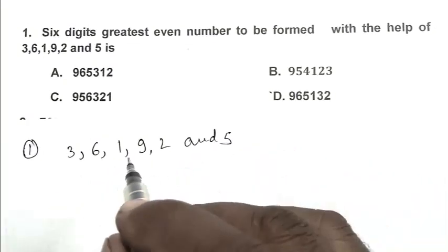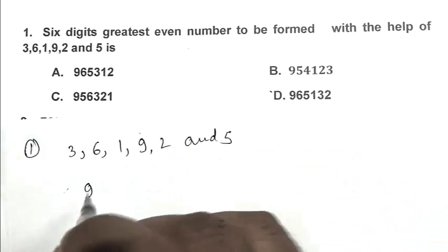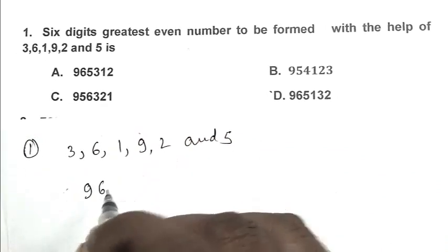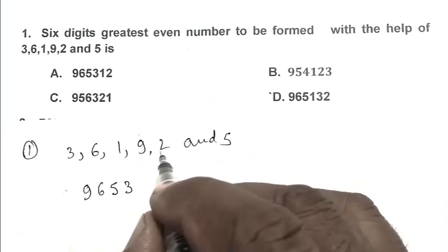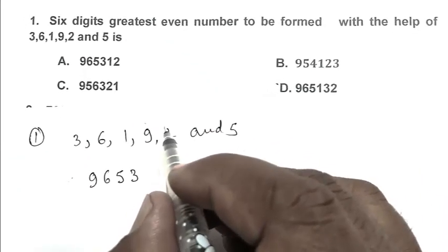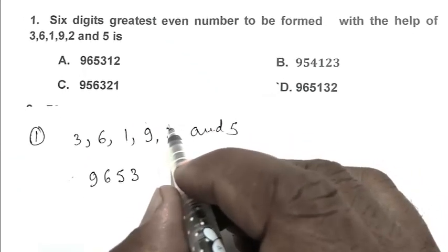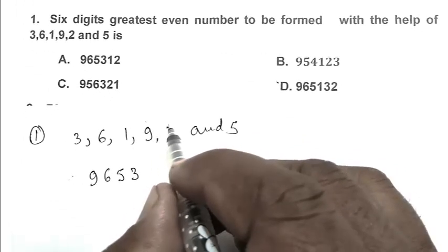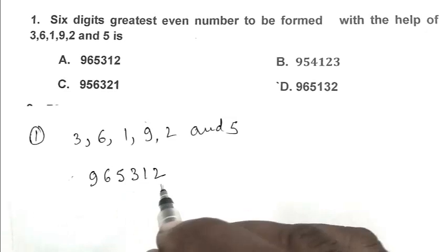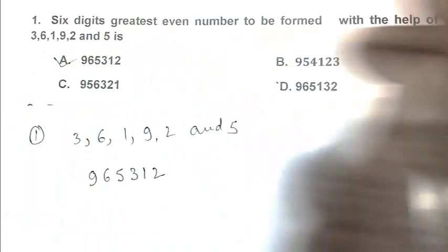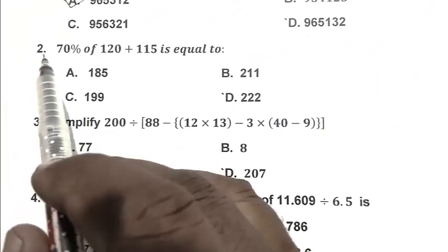We have to write greatest digit first. So we write 9, after that 6, after that 5, after that 3, and we have to write even number. So we have to write the smallest even number 2 in the last. So it's become 965312. So A is the right answer.